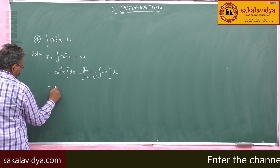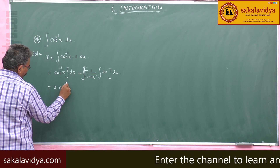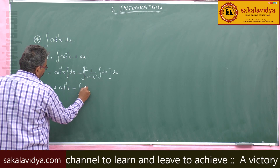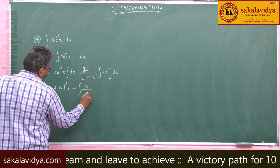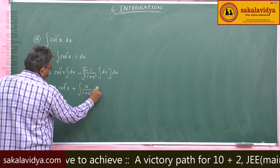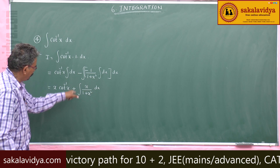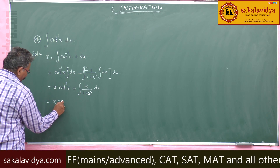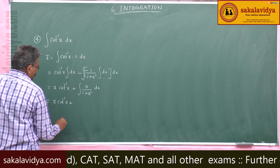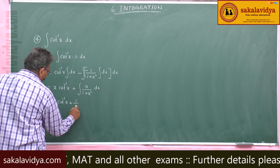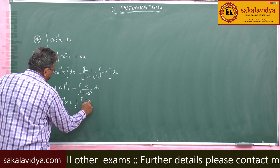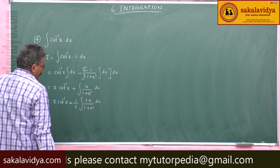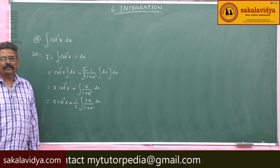This is x cot inverse x. Now, minus of minus gives plus integral x by 1 plus x square dx. Multiply by 2, divide by 2, only up to this integral. So, x cot inverse x plus 1 by 2 integral 2x by 1 plus x square dx. Note that 2x is the derivative of 1 plus x square.